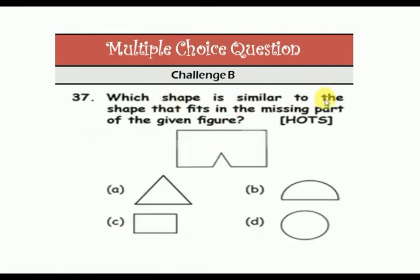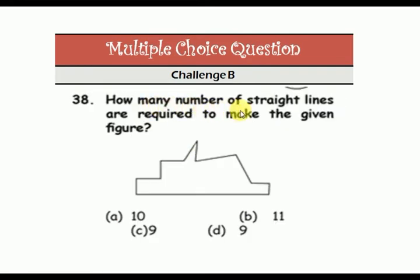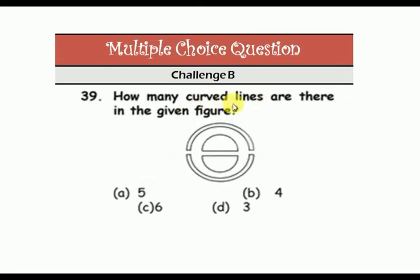Which shape fits in the missing part of the given figure? The answer is A — a rectangle will fit in this figure. How many straight lines are required to make the given figure? Eleven straight lines are needed to make the given figure.